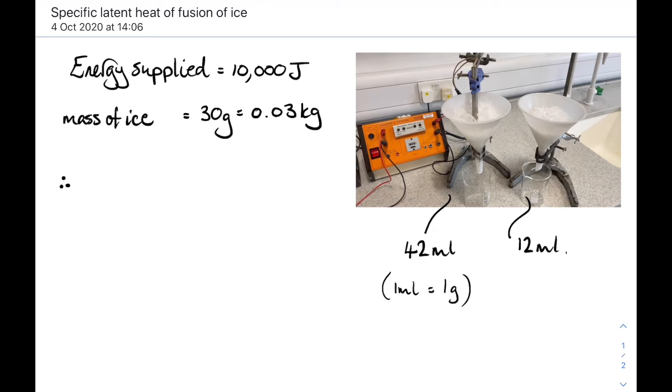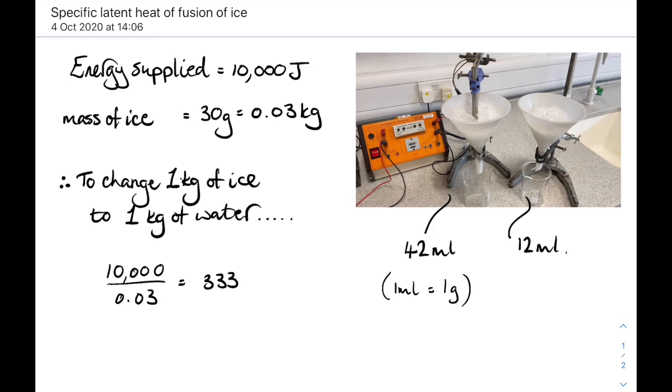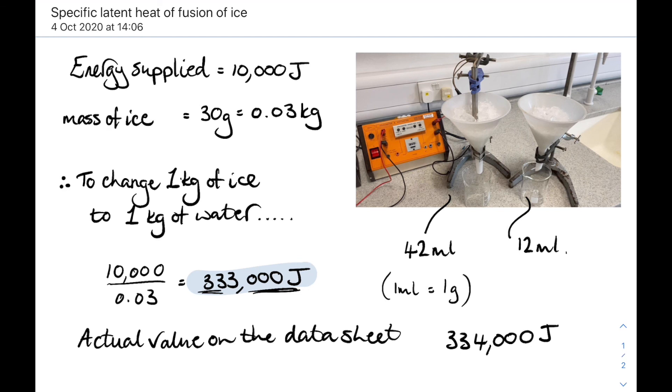Now, if we want to scale that up, if we want to find out how much energy was required to change one kilogram of ice at zero degrees into one kilogram of water at zero degrees, then we divide the energy that we used by the mass that we used. So, 10,000 divided by 0.03, and that gives us 333,000 joules. That would be required to change one kilogram of ice into one kilogram of water. Now, if we look up the actual value on a datasheet, the specific latent heat of fusion of ice is 334,000 joules. That's pretty good, less than 1% of a difference. That's magic!